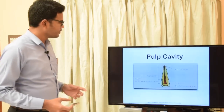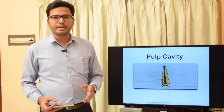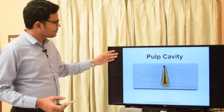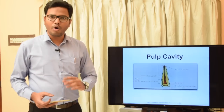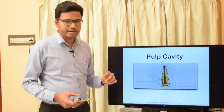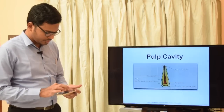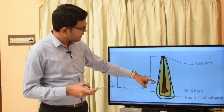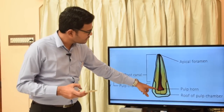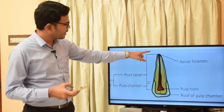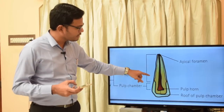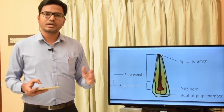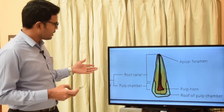The pulp cavity is a space enclosed by dentin all over, except at the apical foramen area. In this image of an anterior tooth, you can observe the pulp cavity or space which is lined by dentin all over, except at the apical foramen where blood vessels or nerves enter or leave the tooth.